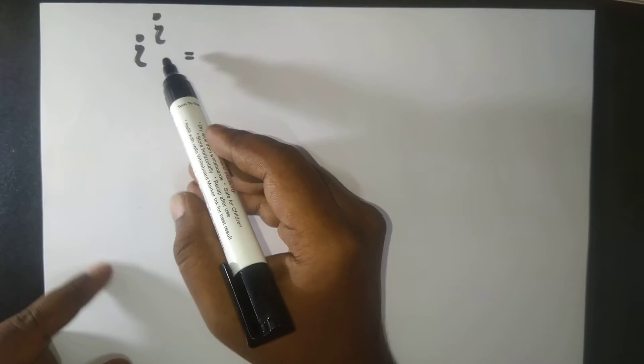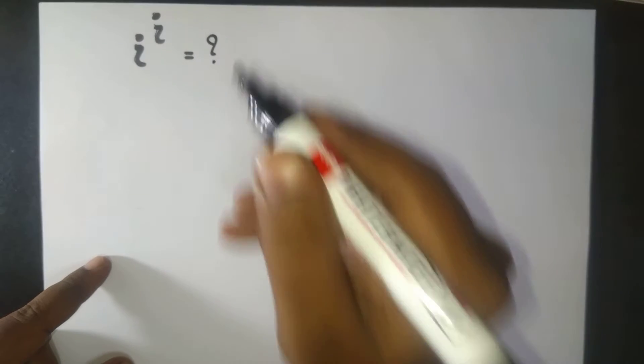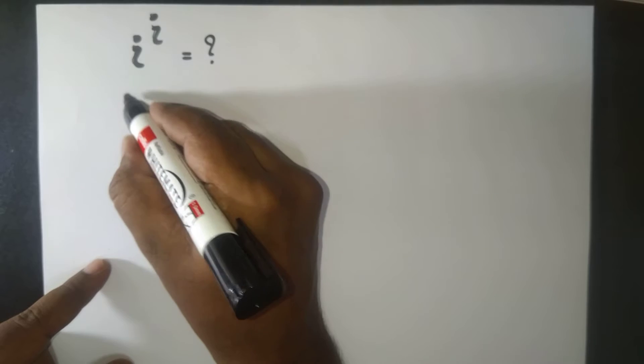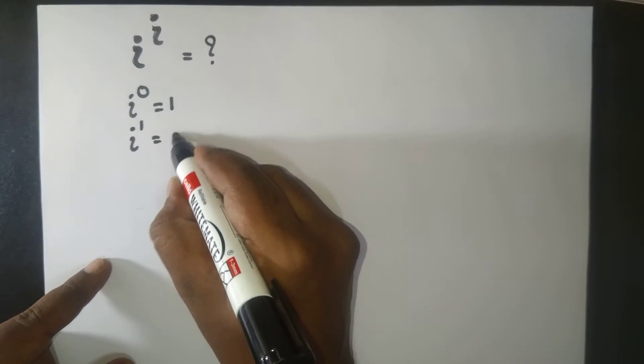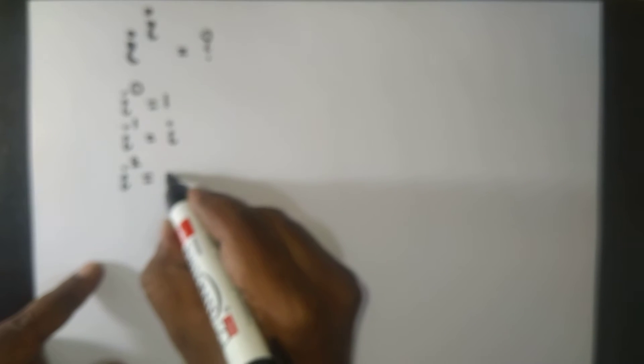Greetings. What is i to the power of i, the imaginary number raised to the power of the imaginary number, equal to? Any guesses? You see, i^0 is equal to 1, and i^1 is of course i, and i^2 is negative 1. This is remarkable.